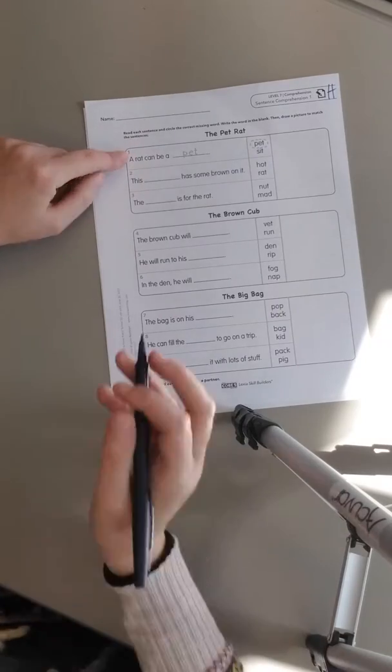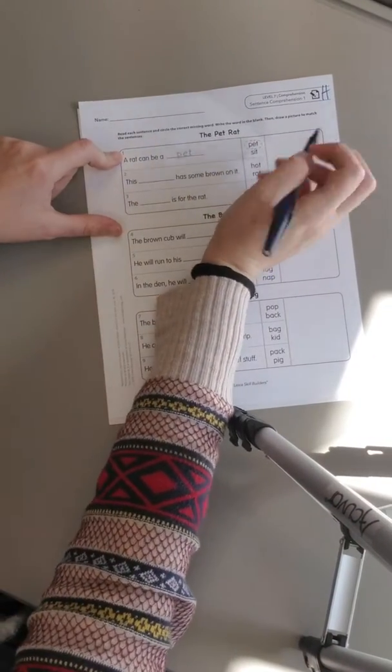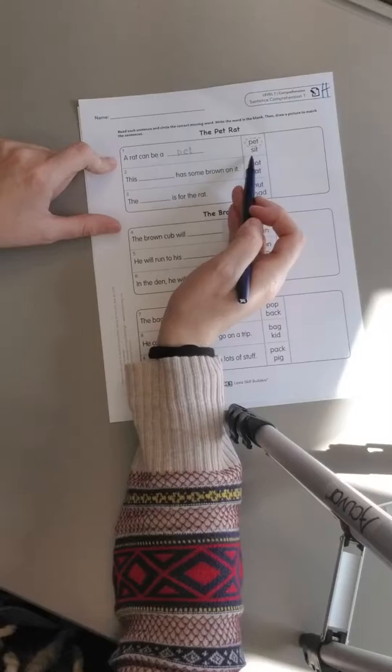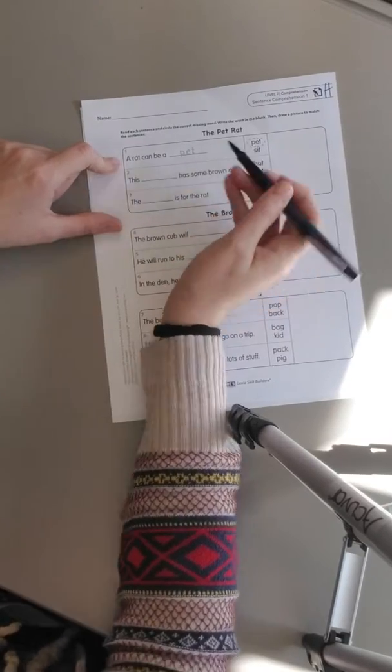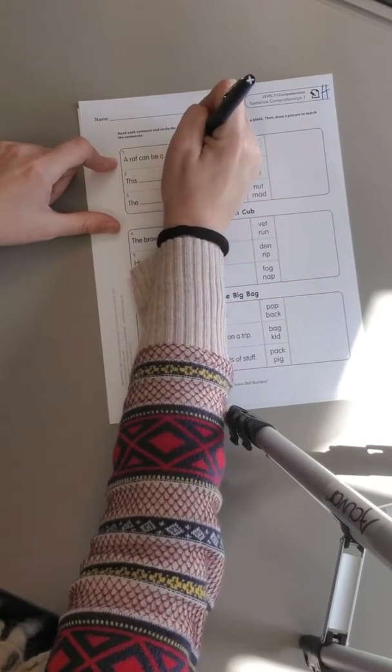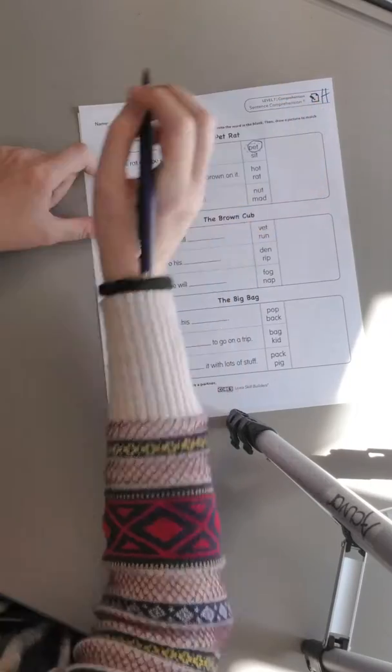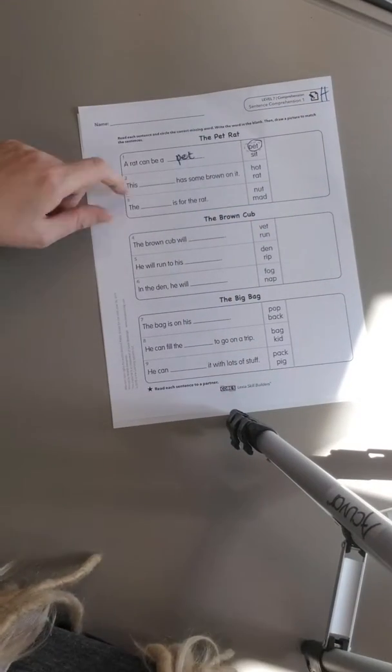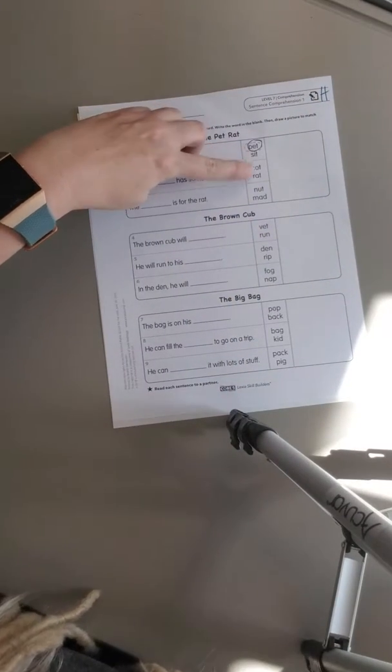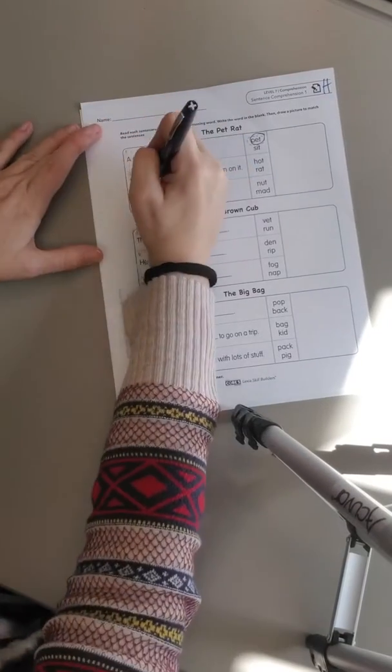A rat can be a pet, so they had to pick from pet and sit. So a rat can be a sit, no, a rat can be a pet. So pet goes in the blank and they circled it. This blank has some brown on it. This hot has some brown on it. This rat has some brown on it.